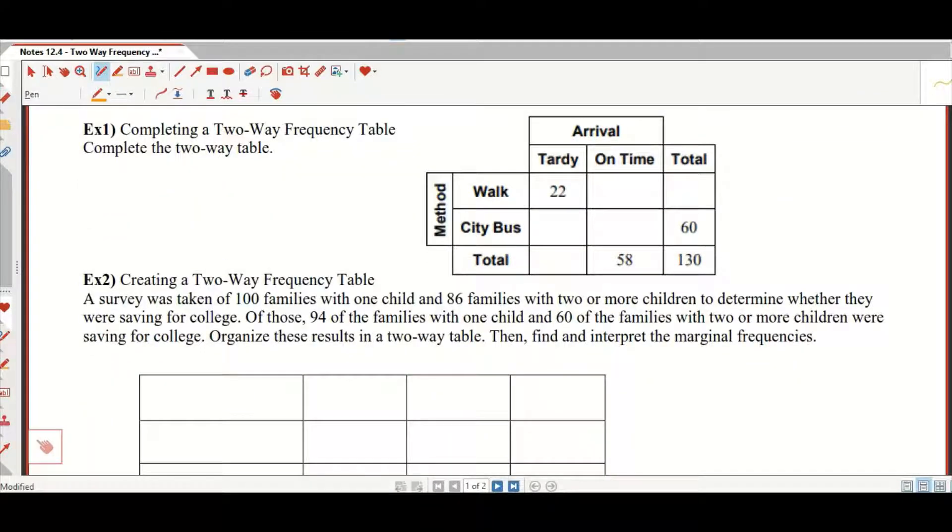So we can use that to complete a two-way frequency table. Let's see here. This tells us that the total people we spoke to were 130 people. So it looks like we asked people, were they tardy or on time, and did they walk or take the city bus? Let's check and see if we can fill in the total number of people who walked. So if 130 people were the people we talked to, and there were 60 people who took the bus, if we subtract those, 130 minus 60, that's 70. So a total of 70 people walked.